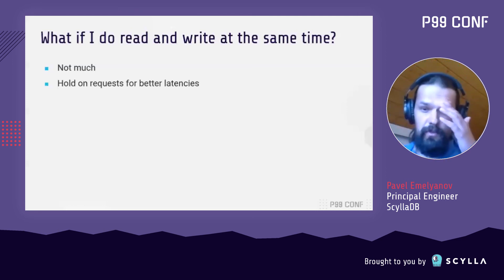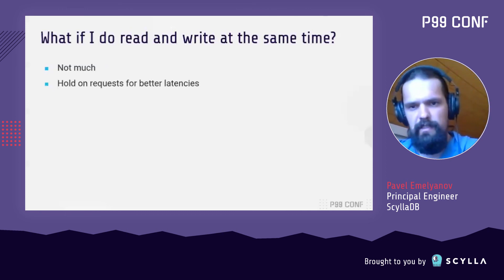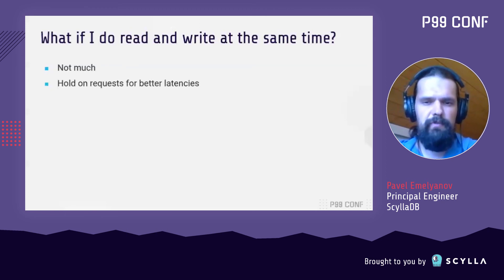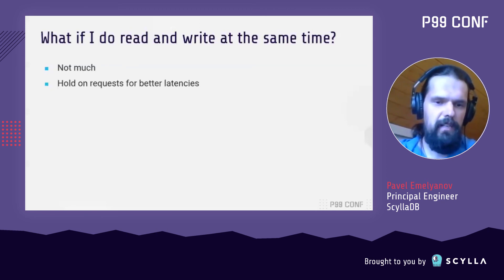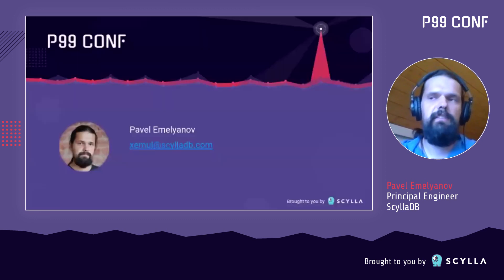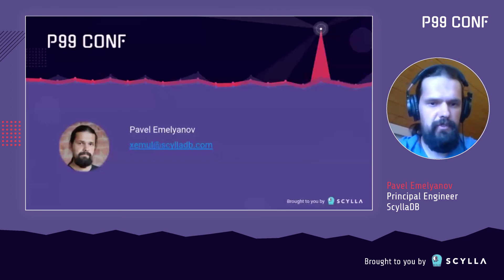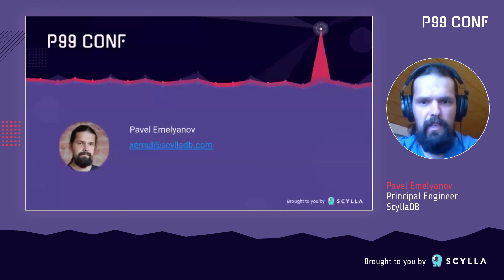Nonetheless, if you are warned, then you are armed. Knowing that the disk behaves this way may help improve the latency of requests. For example, in Scylla, we have an IO scheduler at the Seastar level that keeps requests in the queue before submitting them to disk in order to prioritize them. Teaching the scheduler with the knowledge that reads become slower when they compete with writes allows it to keep request latencies under control. That's all I have.